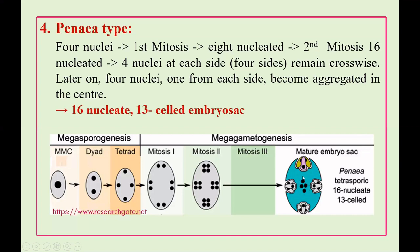The micropylar nuclei develop into 2 synergids and 1 egg cell. The remaining 9 nuclei — arranged as 3 groups of 3 — act as antipodal cells, and 4 nuclei reside in the central cell. So plumbago-type is 16-nucleate but has a 13-celled structure, and the endosperm is 5N in nature. This is a notable characteristic of the penia-type as well.